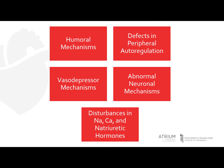There are multiple factors that control blood pressure that can be potential contributing components in the development of essential hypertension. These include malfunctions in either humoral or vasodepressor mechanisms. One common humoral mechanism is the RAS, also known as the renin-angiotensin-aldosterone system.